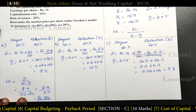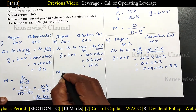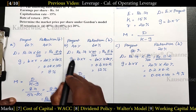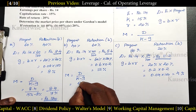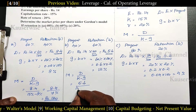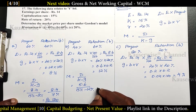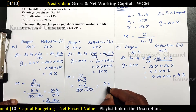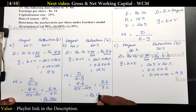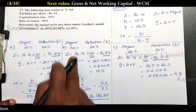For Case 2: M = D / (K − G) = 5.6 / (15% − 12%) = 5.6 / 3% = ₹186.67. This is the market price per share according to the second case.